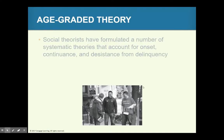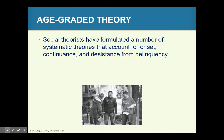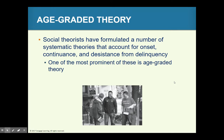Age-graded theory suggests that if you build social capital and strong social bonds, there is a strong likelihood of a reduction in long-term deviance. Building up social bonds helps get kids out of delinquent behavior. This is one of the most prominent systematic theories, and you can see how these theories are all interrelated while remaining independent.